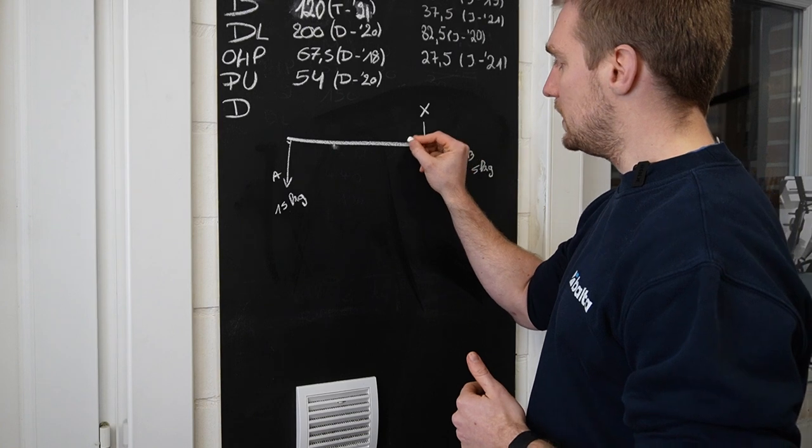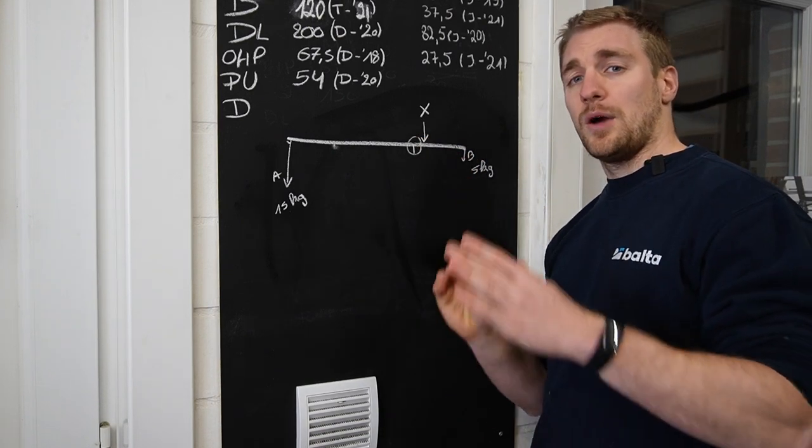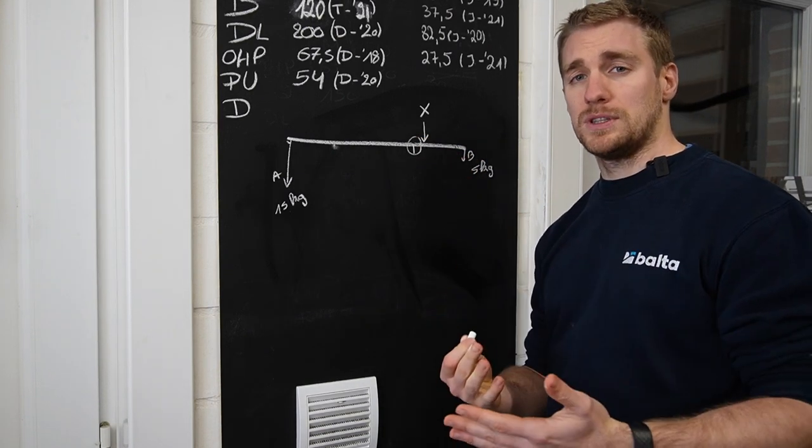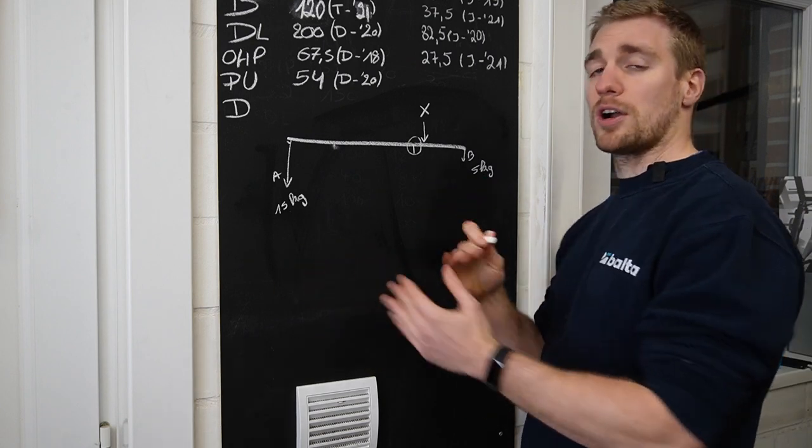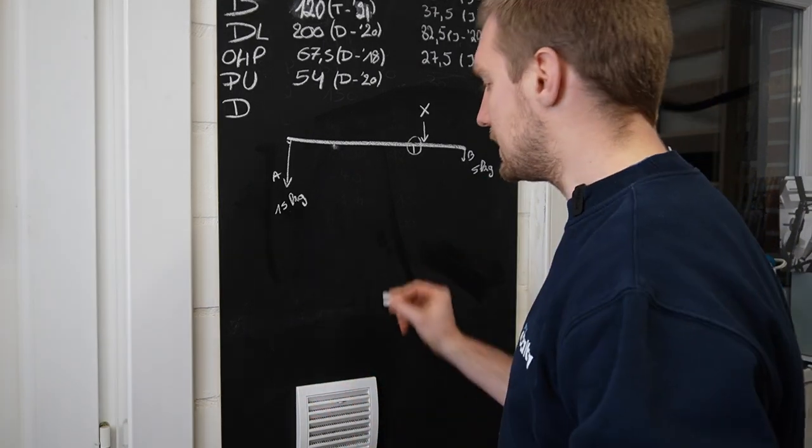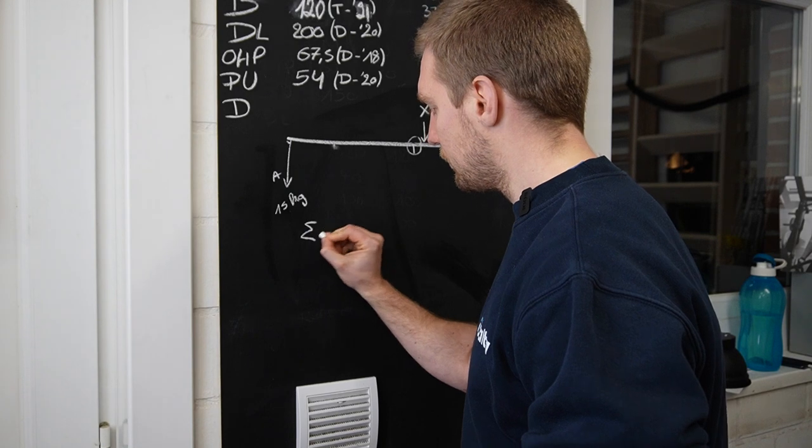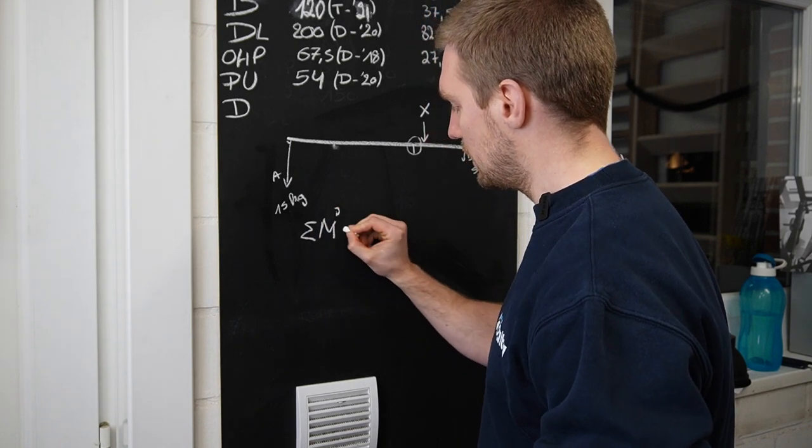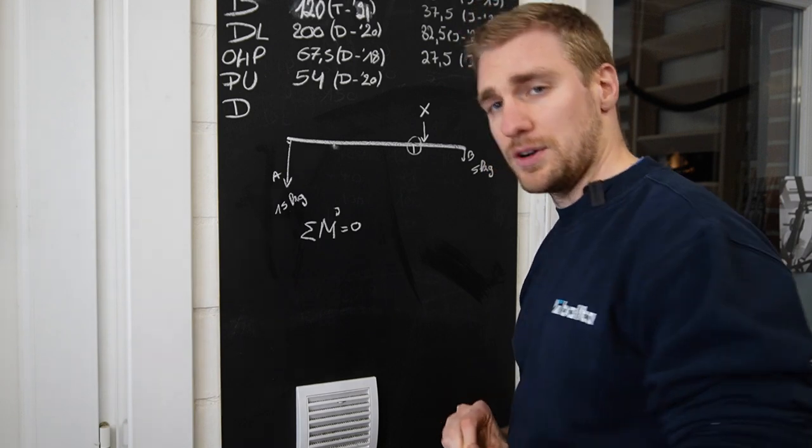And that means that we need to look at this point here and we need to calculate the moment at which this bar comes weightless. So here we can say that the sum of the moment in that direction needs to be 0.